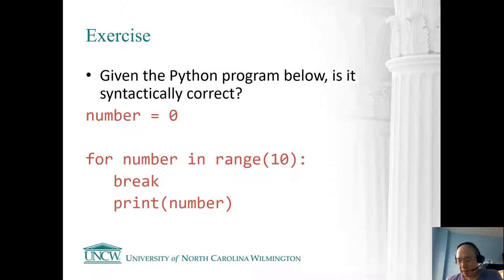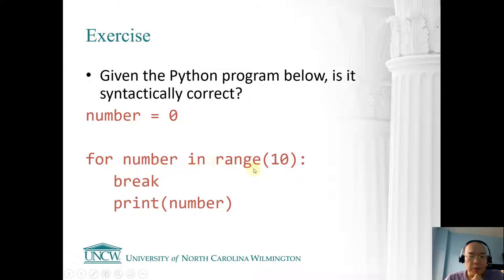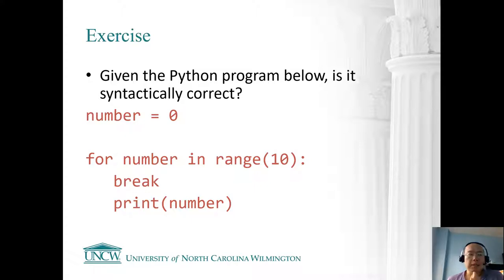I don't really see anything particularly wrong in the syntax. The next question is, what will this program produce? What will be the output? If we want to read this code together, we created a variable called number with an initial value of zero. Then we say for number in the range 10, and in the body of the for loop, we do a break and then we print the number. So what is going to be the expected output?